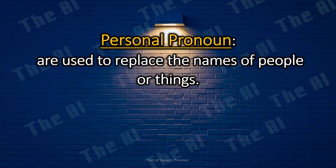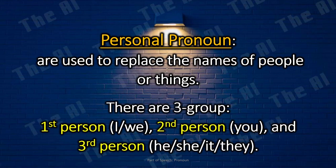Personal Pronoun. Personal pronouns are used to replace the names of people or things. There are three groups. First person: I, we. Second person: you. And third person: he, she, it, and they.